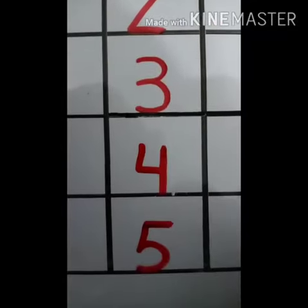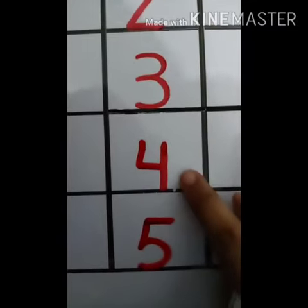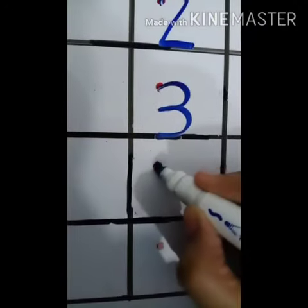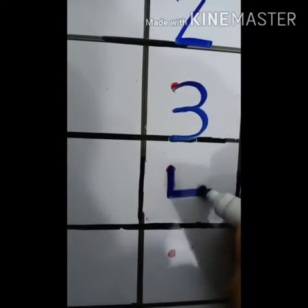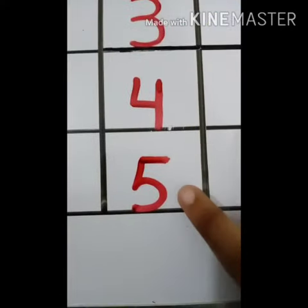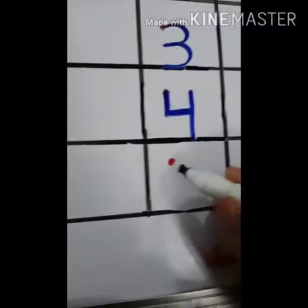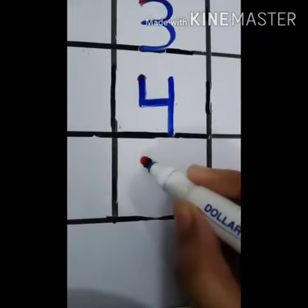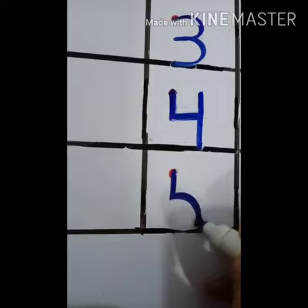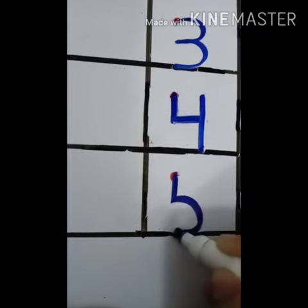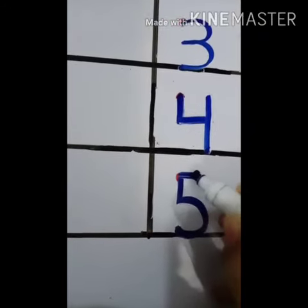Next number four — four is: come down, make a dash, go up, come down and down. Next number five — five is: come down, make a round, then make a dash up.